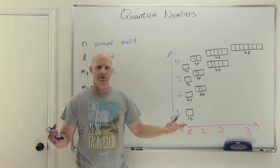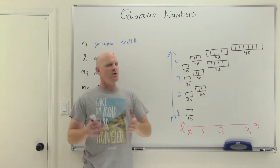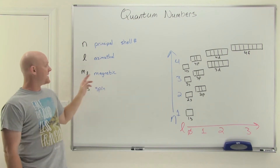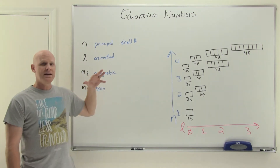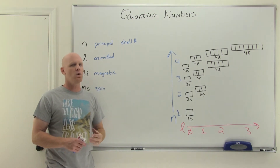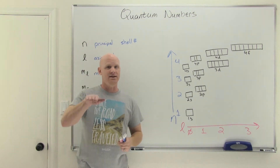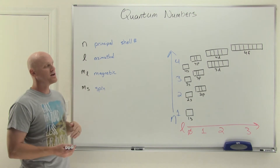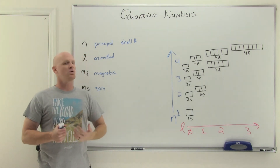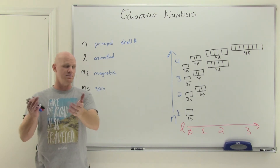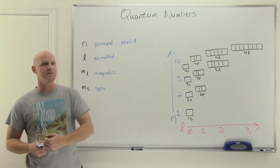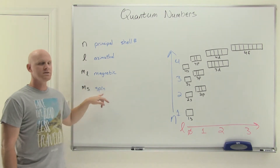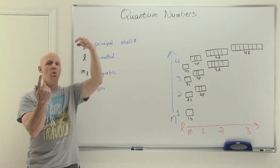There are three 3p orbitals though — which one are you in? That's where the next quantum number comes in. The magnetic quantum number, M sub L, tells you which specific orbital you're in. Your P orbitals — Px, Py, and Pz — are all dumbbell-shaped but differ in orientation along the axes. So M sub L tells you the orientation in space, identifying which specific orbital in that subshell. Finally, the spin quantum number tells you if an electron has spin up or spin down.